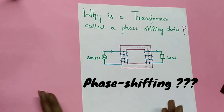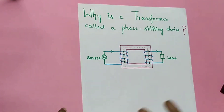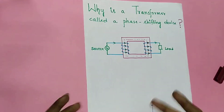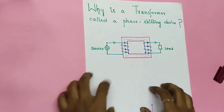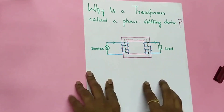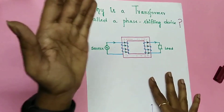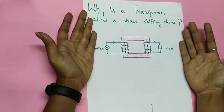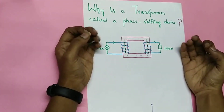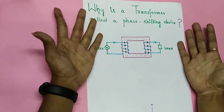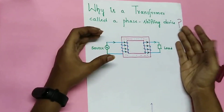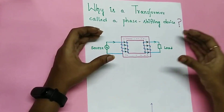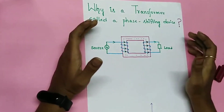So what is phase shifting? Generally, if a vector quantity is lagging or leading another vector quantity, then those two quantities are said to be phase displaced. Here we are comparing the input quantity and the output quantity in terms of their phase angles — that is, what we are giving is not coming out the same way at the output.